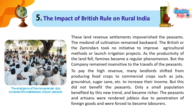As the productivity of the land fell, famines became a regular phenomenon. But the company remained insensitive to the travails of the peasants. To pay the high revenue, many landlords shifted from producing food crops to commercial crops such as jute, groundnut, sugarcane, etc. to increase their income.